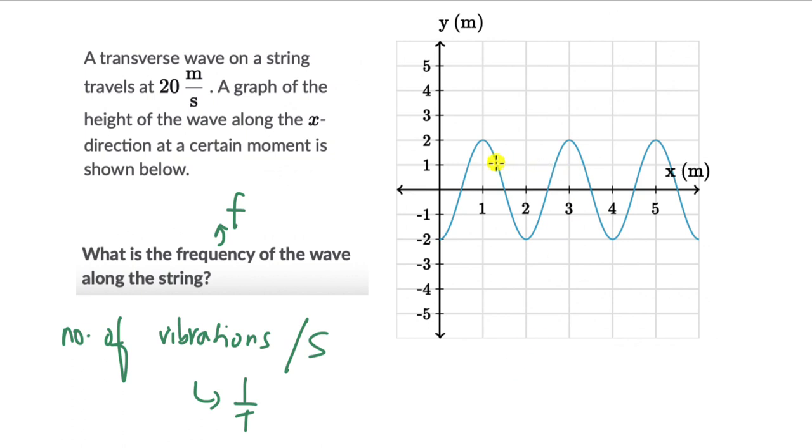And we can actually try and figure out the wavelength from this graph, right? Wavelength was the distance between two consecutive maximas or two consecutive minimas. So for this wave, the wavelength really is 2 meters. We can see it is 2 meters.